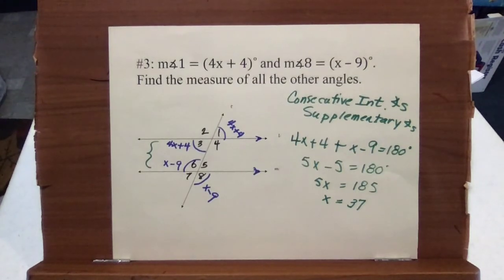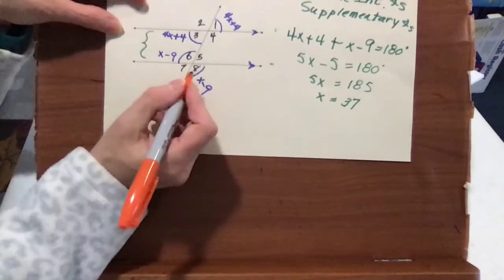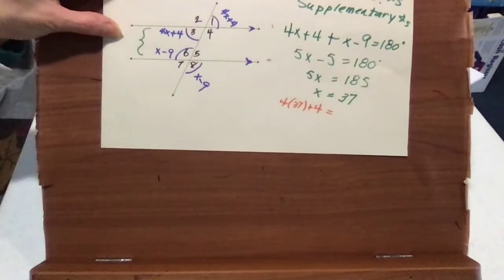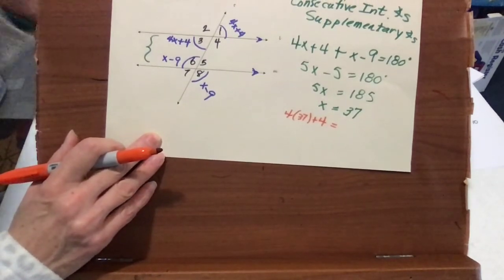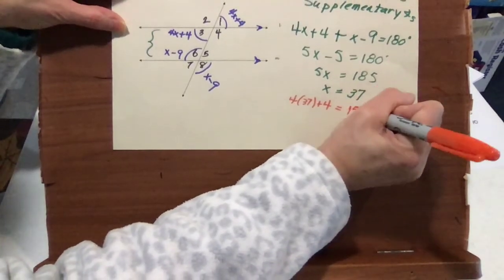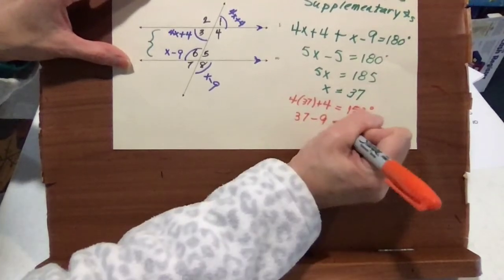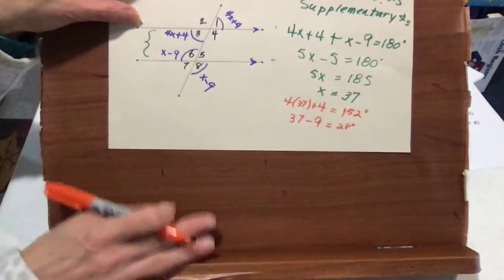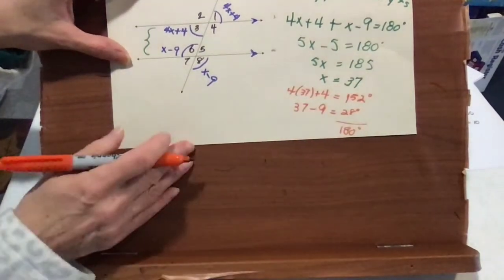Because x is 37, we plug in: 4 times 37 plus 4 equals 152. And then 37 minus 9, which is the other angle, gives us 28. Let's check: 152 plus 28 equals 180. Yes, because they are supplementary — that's our check.